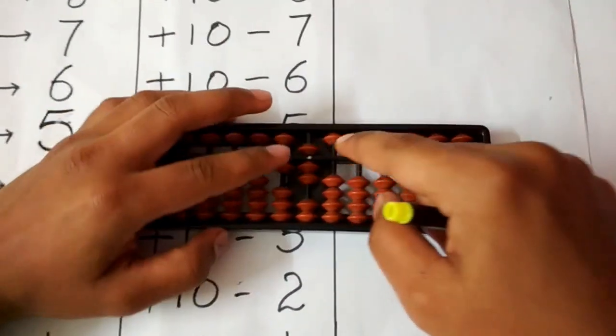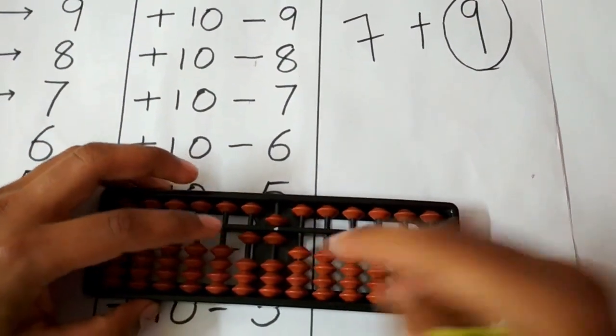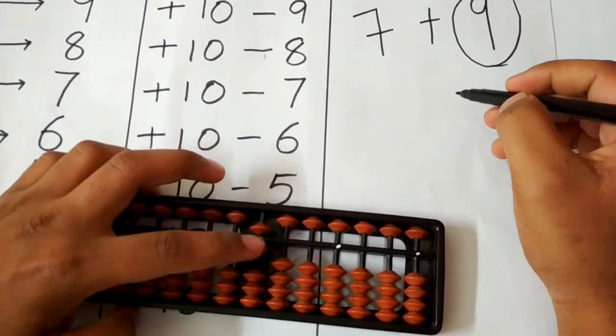Now that we have added 10 on the abacus, we will subtract 1 from the result. We get the answer as 16.